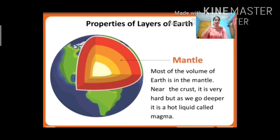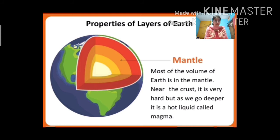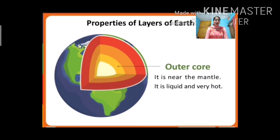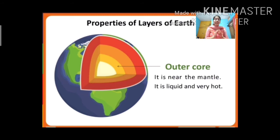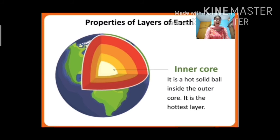Near the crust the mantle is very hard, but as we go deeper it becomes hot liquid called magma. After the mantle comes the core, which has two parts: outer core and inner core. The outer core is just after the mantle — it is liquid and very hot.